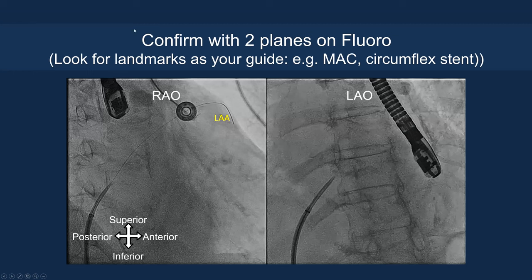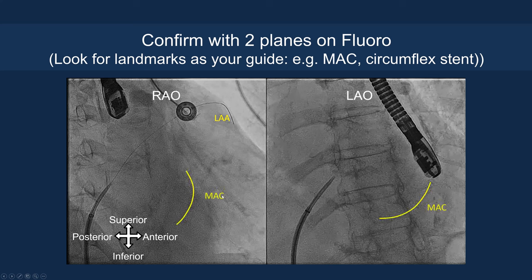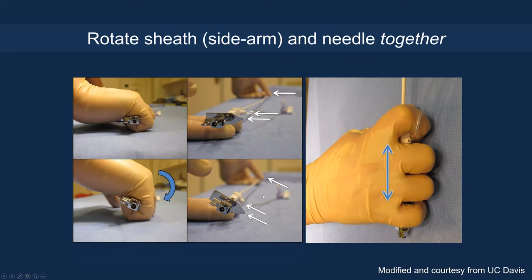Once confirmed, check the fluoroscopic view and look for landmarks such as mitral annular calcification or circumflex stents. You can see superior, inferior, posterior, and anterior on the LAO projection. The left atrial appendage is visible, and you can see where the SafeSept wire has gone — on the LAO view it should be to the left side of the spine, whereas on the RAO view the catheter should be to the right side of the spine as a landmark.